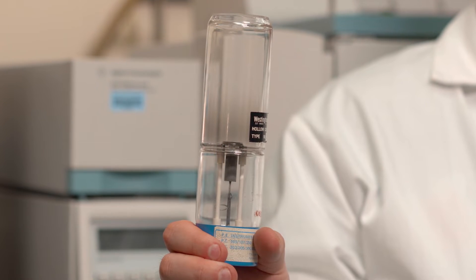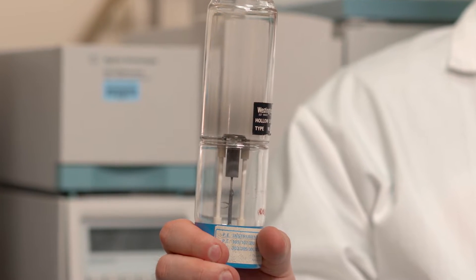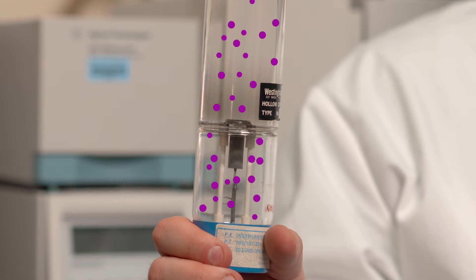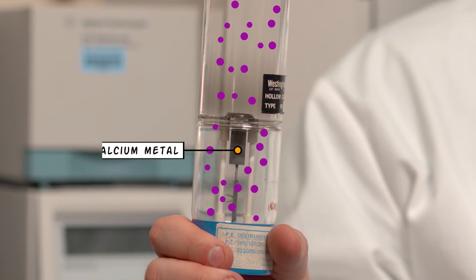Here's a closer look at what a cathode ray tube lamp looks like. Here's one here for a calcium lamp. This is filled not with air, but with neon gas, and in the center you see a bit of calcium metal.